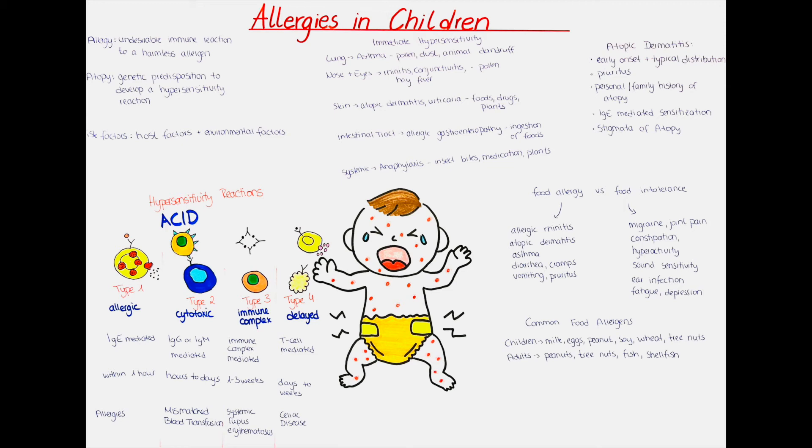Stigmata of atopy refers to a set of characteristics which include dryness of the skin, linear grooves on the fingertips, Dennie-Morgan fold, which is a double intraorbicular fold, hypodense lateral eyebrows, which are also called Queen Anne's eyebrows or Queen Anne's sign, as well as hypersensitivity to wool fabric.